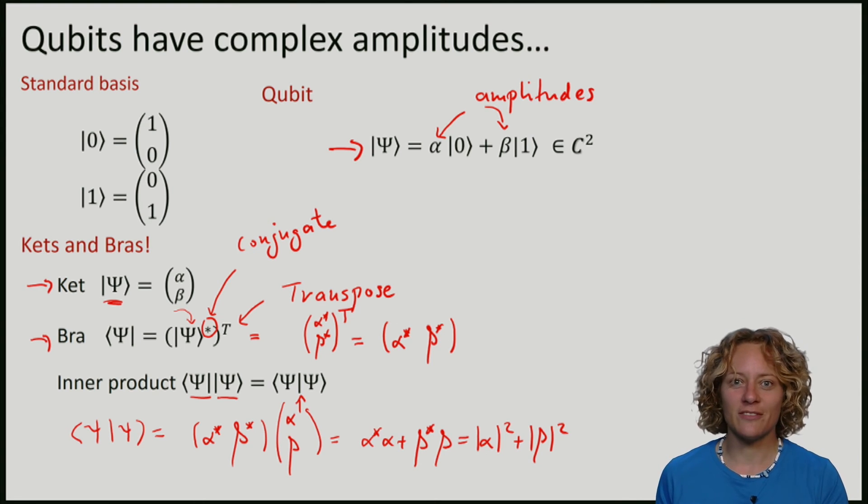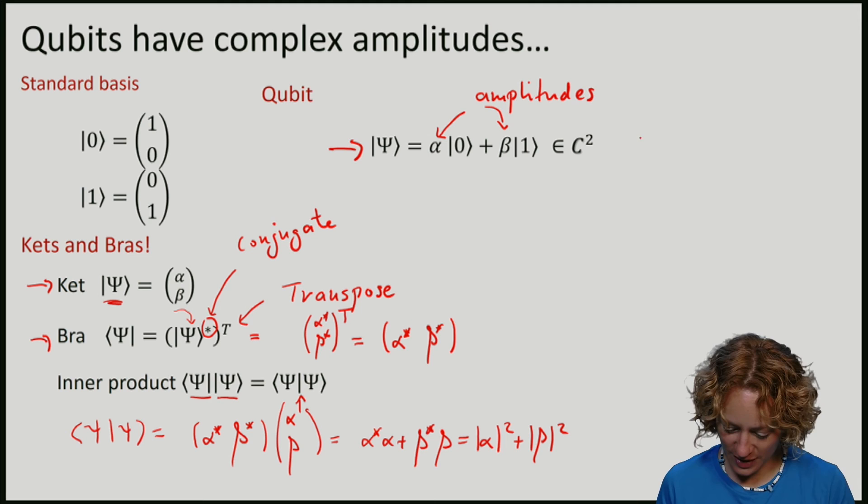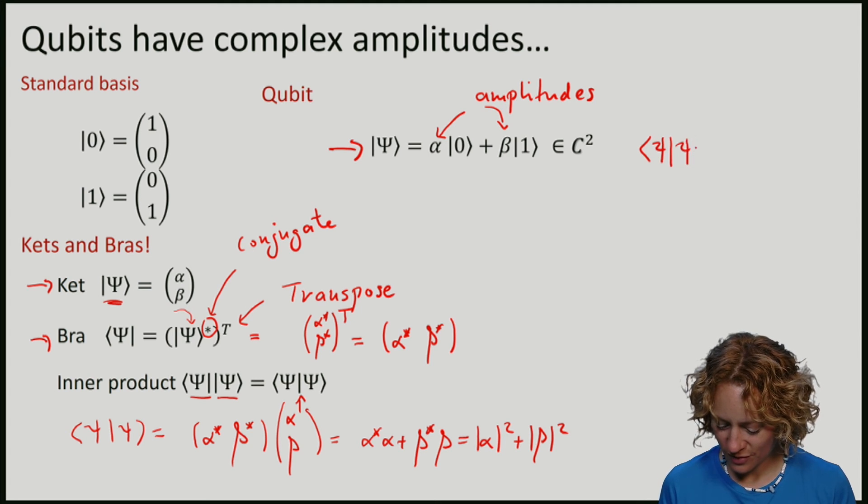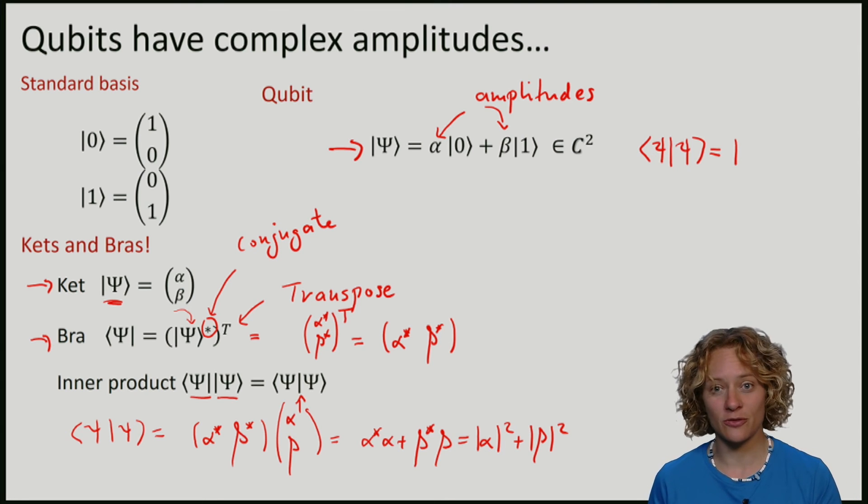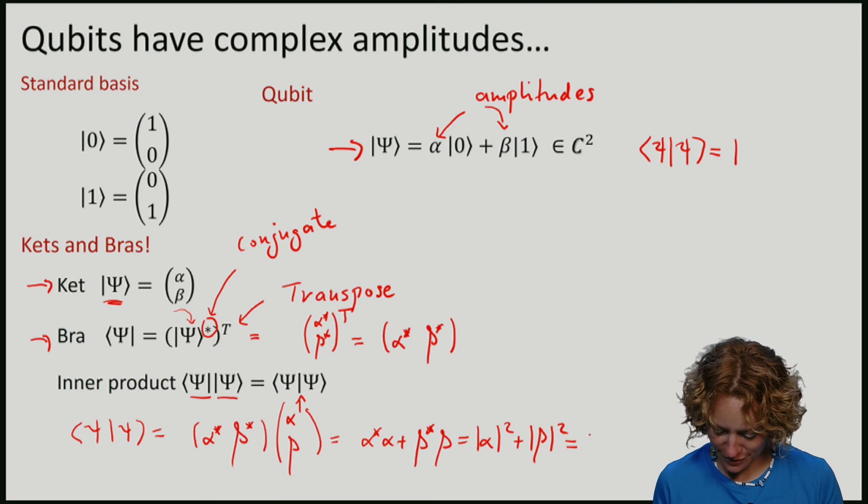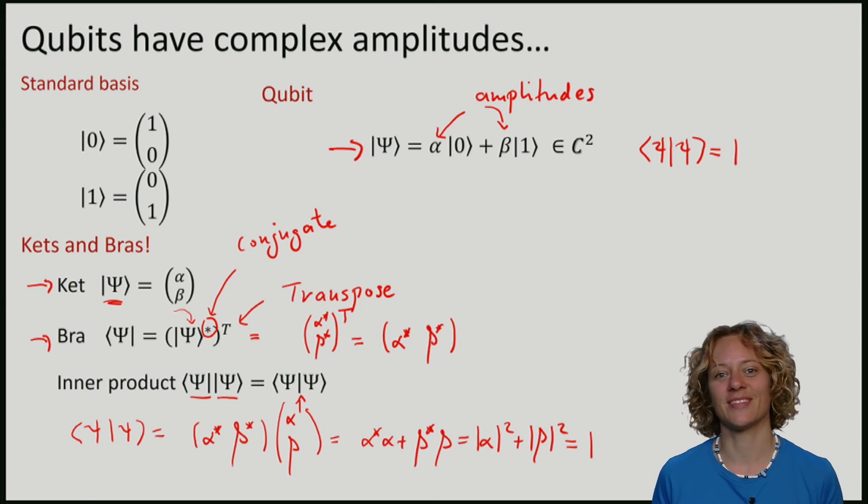So the condition that the vectors have length one can now be written in terms of the inner product. So what we'll get is that the inner product of the vector with itself has to be one. So in terms of the alpha and the beta, this means that the sum of alpha squared plus beta squared is one. So this is a qubit.